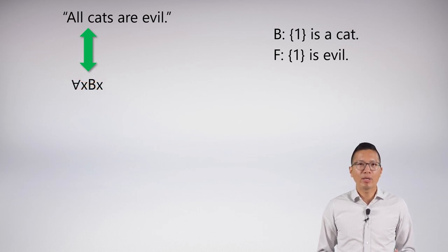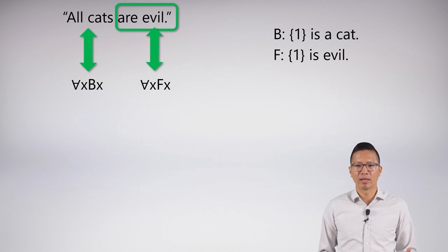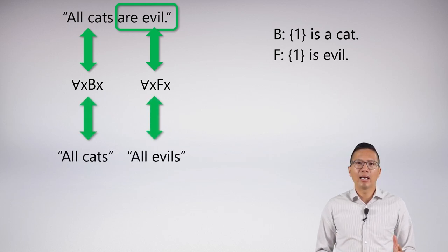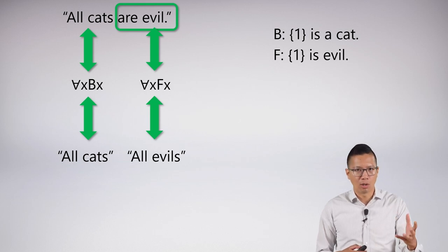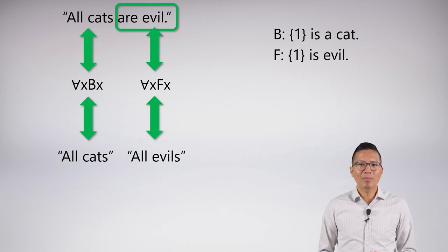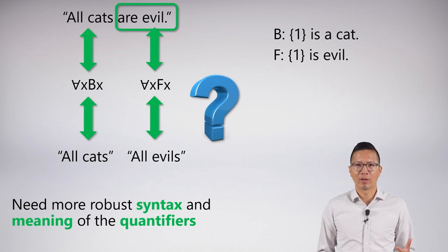How do we say 'all cats are evil'? Well now we know all cats is for all x, Bx. And how do I say are evil? I know that I want to say all things are evil, so I can say something like for all x, Fx. But again, we have some problem here. Even if you're following along and being like, okay, I see why all x, Fx sort of makes sense, it doesn't really relate these two things. On the one hand, I'm saying all cats, and on the other hand, I'm saying all evils. But I'm not really saying all cats are evil. So there's something missing in this. And what's missing is that we really just need a more robust syntax and a better understanding of the meaning of the quantifiers and how they work. And once we are armed with those tools, we'll be able to symbolize pretty much everything that we want in single-place predicate logic.